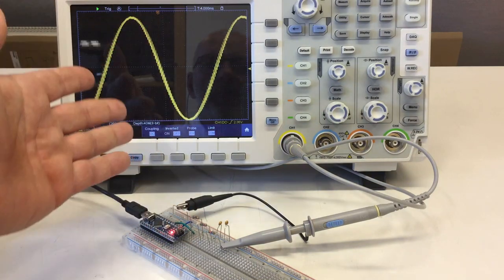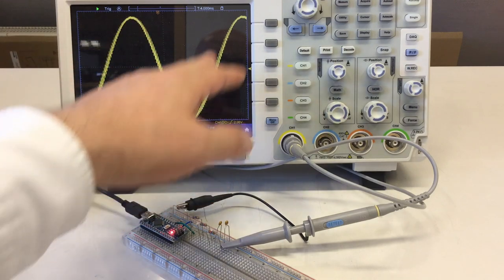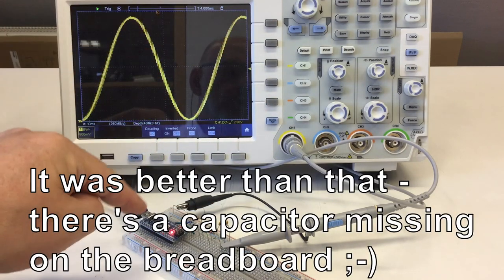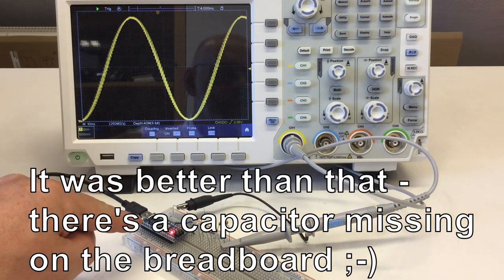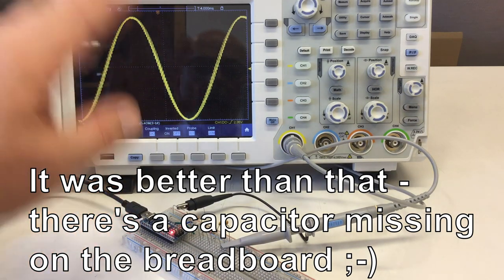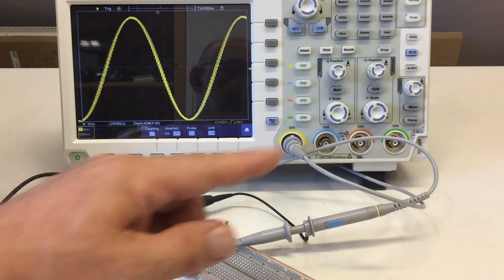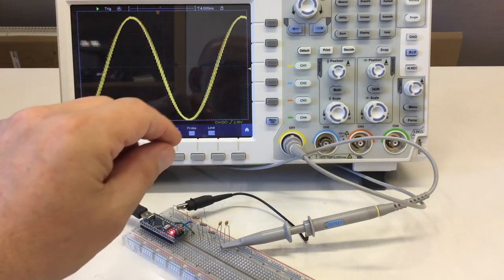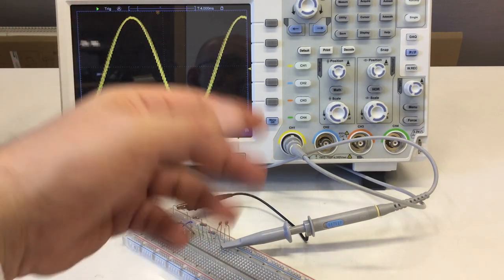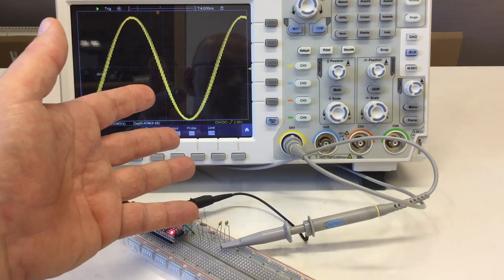In a previous video, I generated a kind of respectable approximation of a sine wave using the PWM output of a microcontroller, specifically an Arduino Nano, and a third-order RC low-pass filter. And at the end of that video, I hinted there are better ways to get analog signals from microcontrollers.